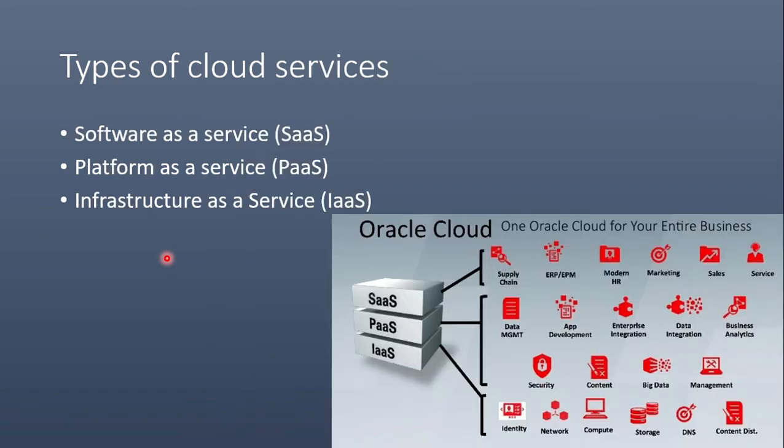What are the types of cloud services? The first one is Software as a Service, that is SaaS. The second is Platform as a Service, that is PaaS. And the third is Infrastructure as a Service, that is IaaS.